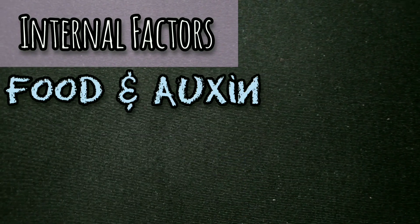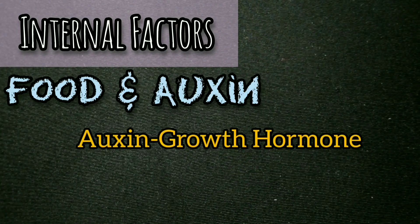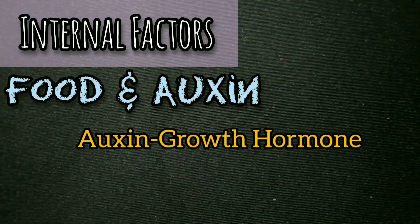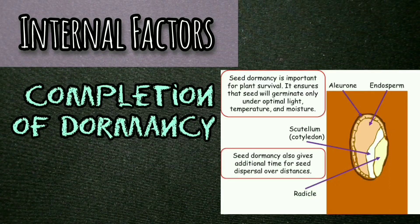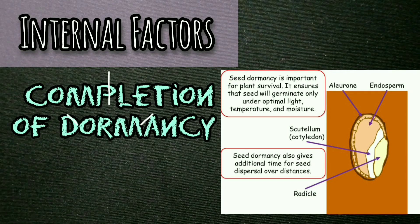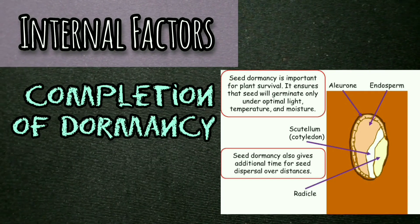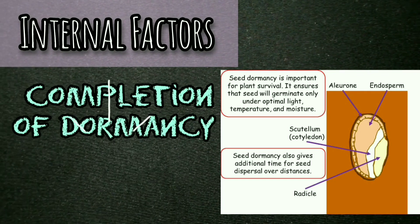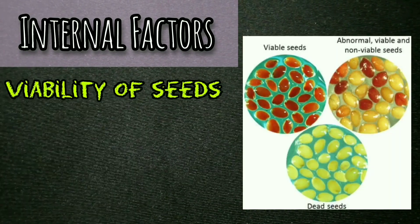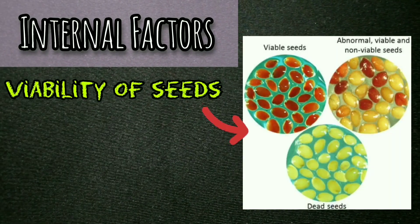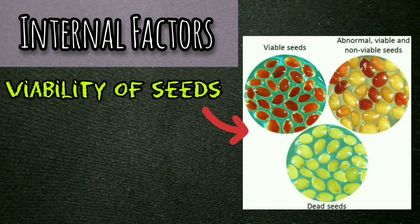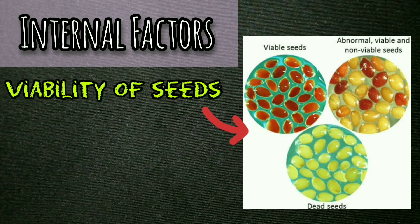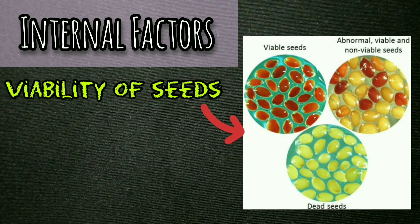Auxins are growth-promoting substances which are essential for growth during germination. Many angiospermous seeds have to undergo a period of dormancy. Many cereals are capable of germination immediately after harvesting, while others do not germinate till after a year. However, seeds retain their viability for a definite period of time, after which the embryo becomes dead for all practical purposes.